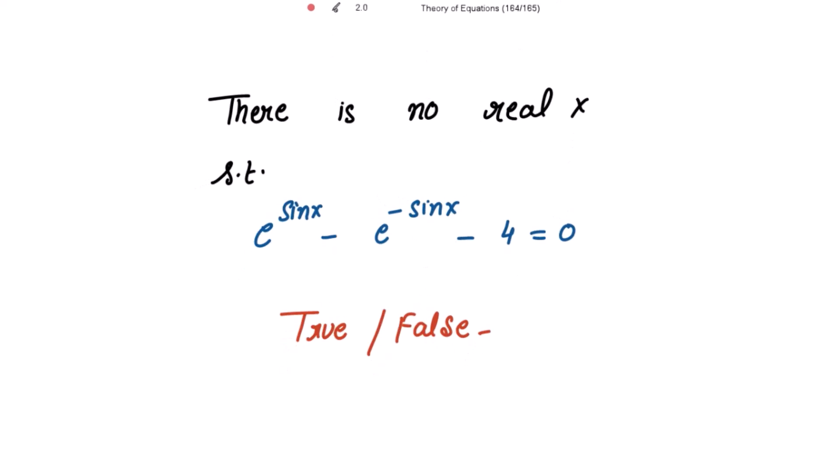There is no real x such that e to the power sin x minus e to the power negative sin x minus 4 is equal to 0. We need to check if this is true or false.